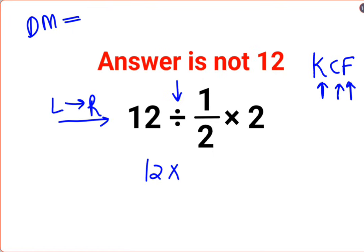F stands for flipping or taking the reciprocal of 1/2, which is 2, multiplied by 2. So the answer for this question is supposed to be 48.